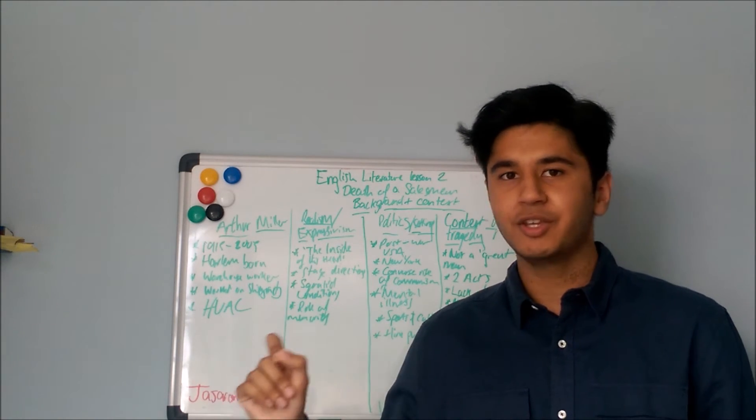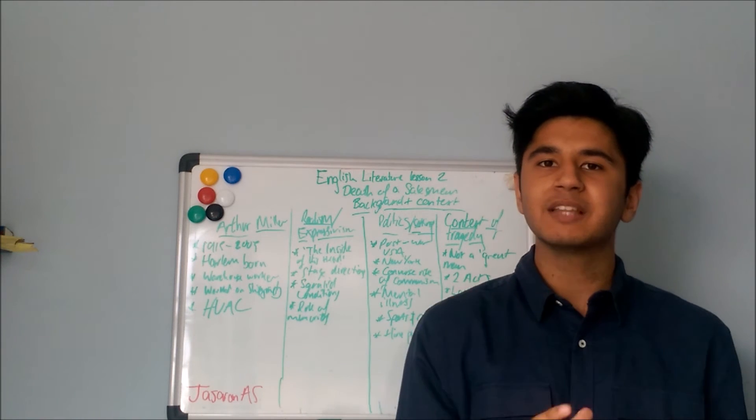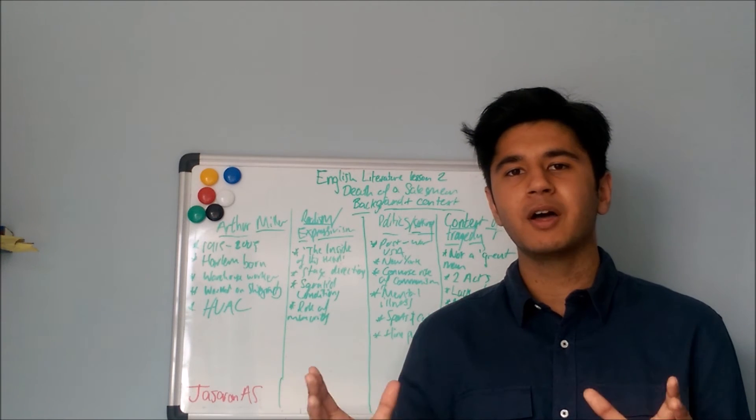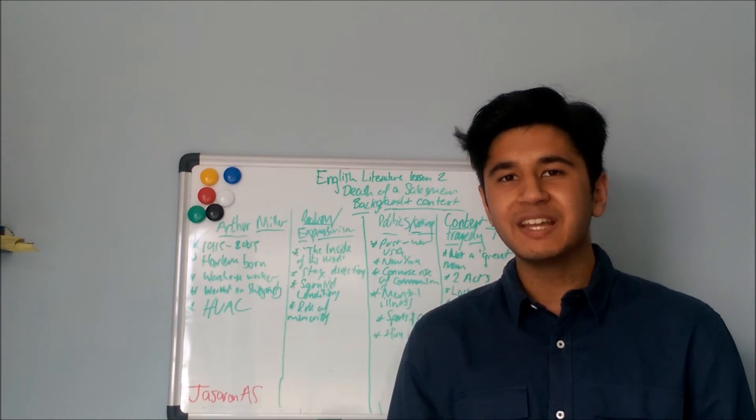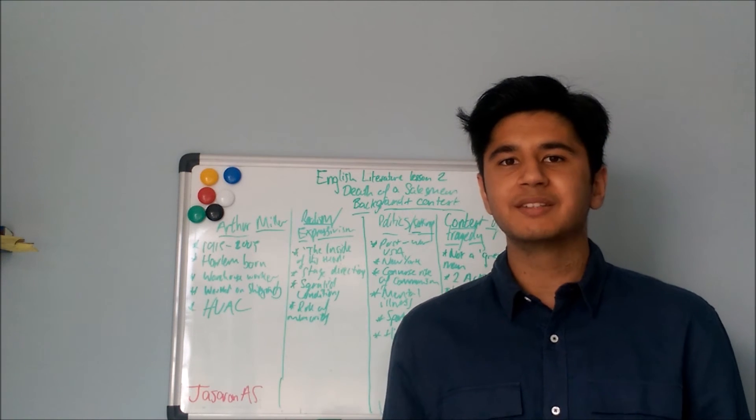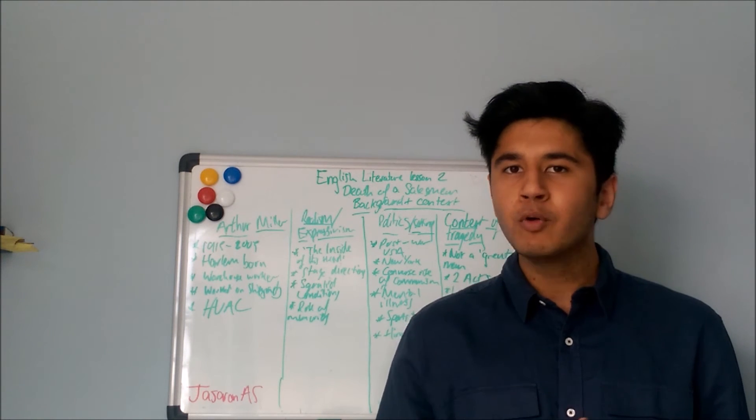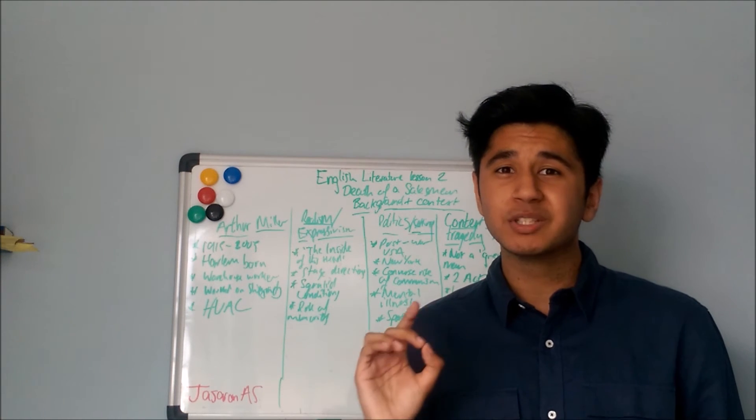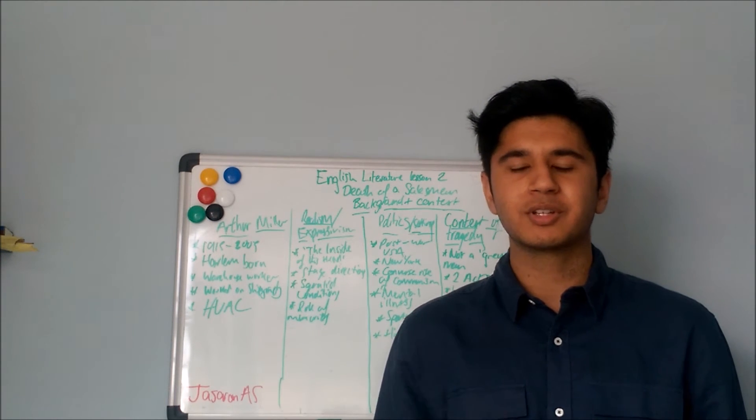So I think to some extent Miller is showing us what America is actually like. He doesn't show us what the Soviet Union is like but I think at the time we can infer a difference between the two systems. What I'm trying to say is that at this point more than any other point in history there is an alternative for people to capitalism.